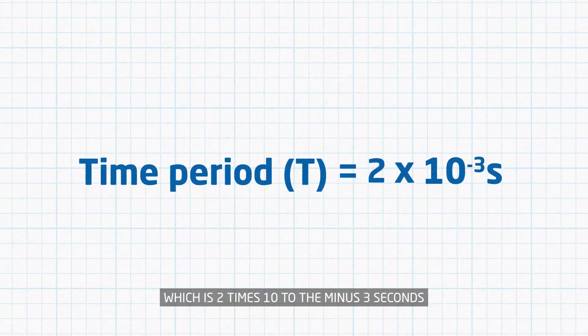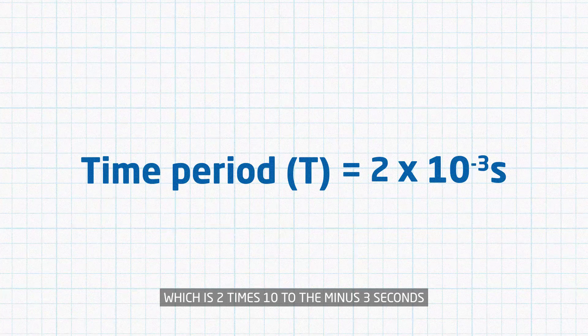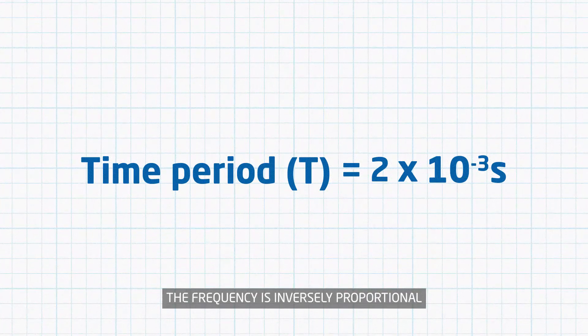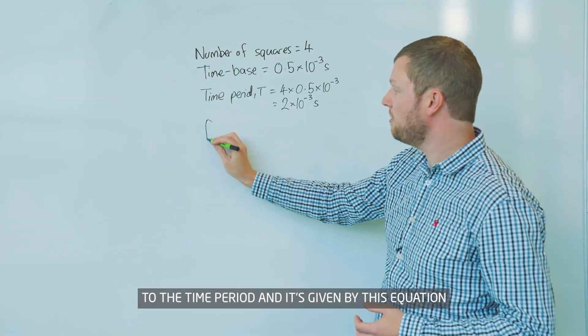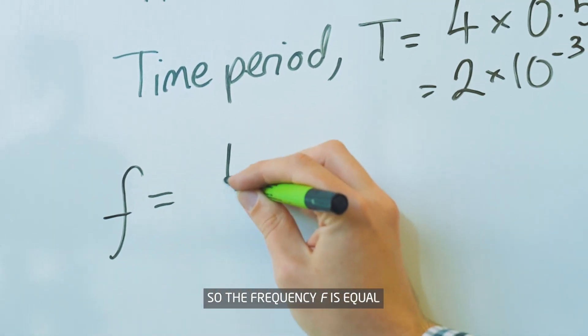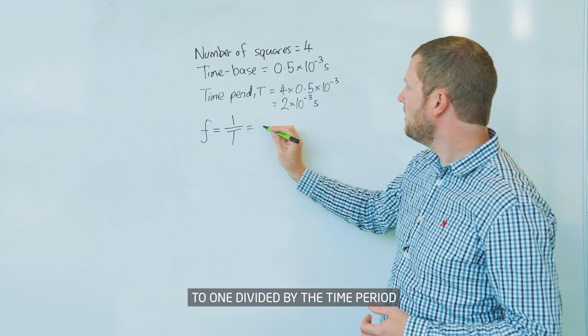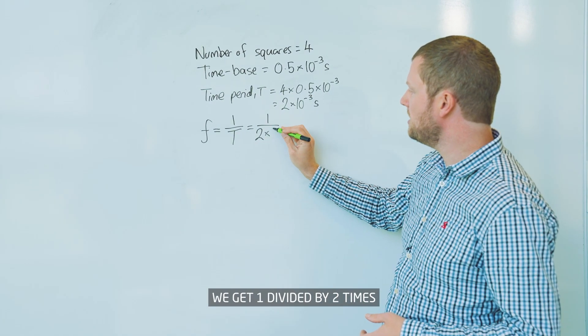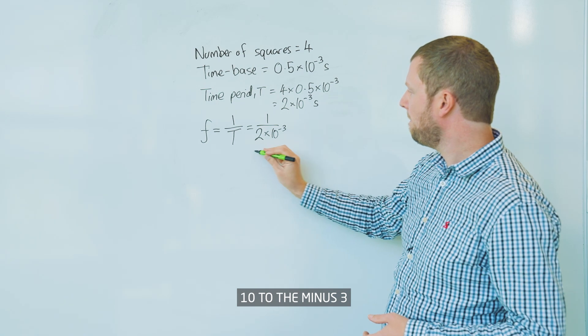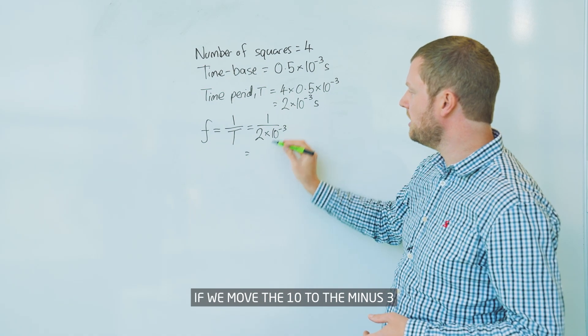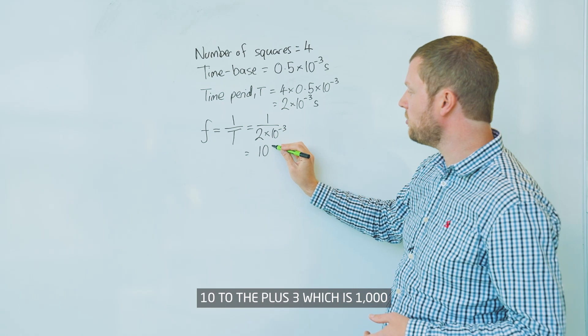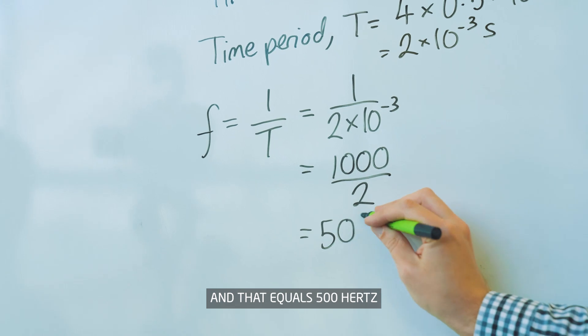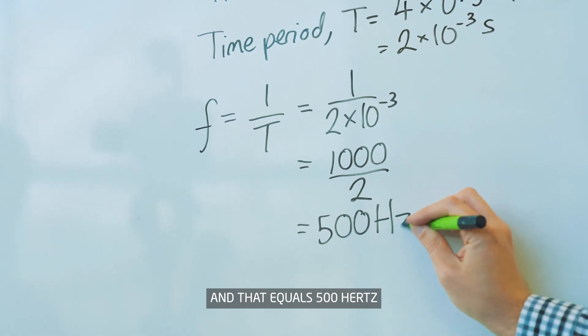The frequency is inversely proportional to the time period and is given by this equation. The frequency f equals 1 divided by the time period. If we put those values in, we get 1 divided by 2 times 10 to the minus 3. If we move the 10 to the minus 3 to the numerator, that becomes 10 to the plus 3, which is 1000, and that equals 500 hertz.